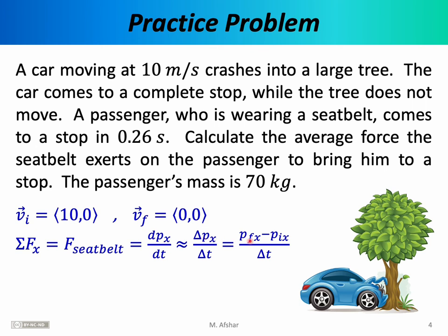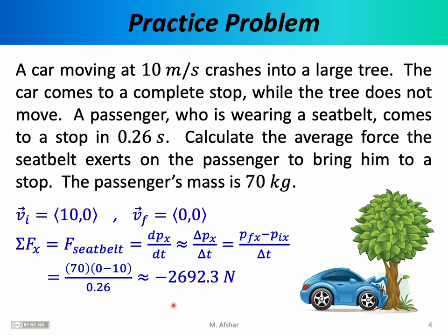The force of the seat belt on the passenger equals the derivative of the passenger's x momentum with respect to time. We're interested in the average force, so we replace dp/dt with Δp/Δt. Δp is the change in momentum, so we have p final minus p initial. The mass of the passenger is 70 kilograms, the final velocity is zero, and the initial velocity is 10. The stopping time is 0.26 seconds. We find that the force necessary to stop the passenger is -2692.3 newtons. It's negative because the car is moving in the positive direction, and to stop the passenger we need to exert a force in the opposite, negative x direction.